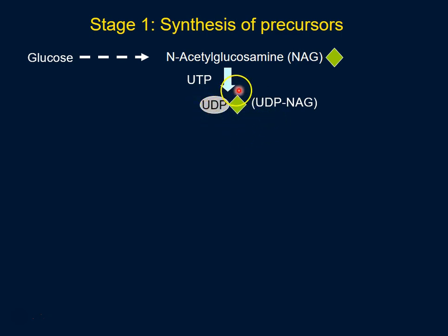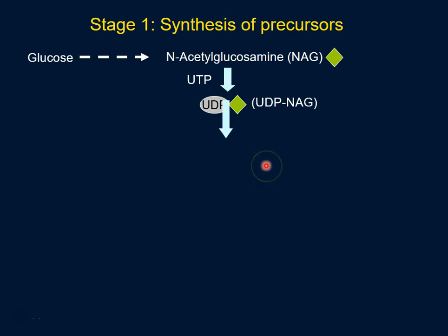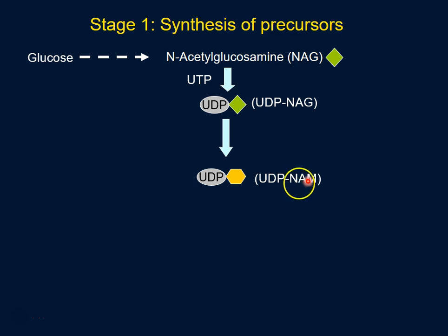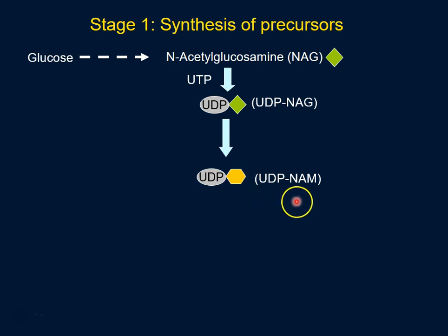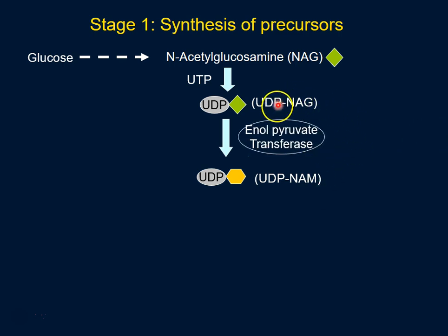This conversion of UDP-NAG to UDP-NAM is catalyzed by an enzyme known as enolpyruvate transferase. This enzyme essentially takes a molecule of enolpyruvate and attaches it to UDP-NAG to produce UDP-NAM.